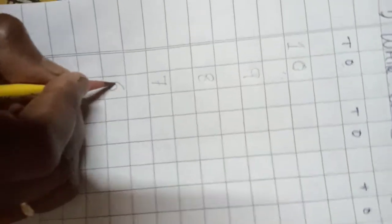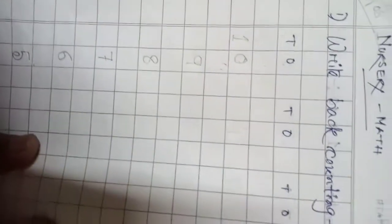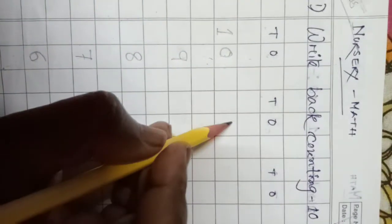Eight is also in ones place. Seven is in ones place. Six is in ones place. Five is in ones place. Okay, next four. Four is in ones place.